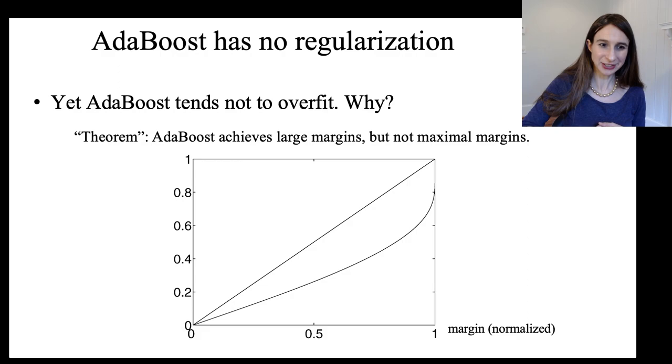Okay, so I'm going to put up a picture here where if I have the normalized margin along the horizontal axis and then these two curves. So this is the best possible margin, right?